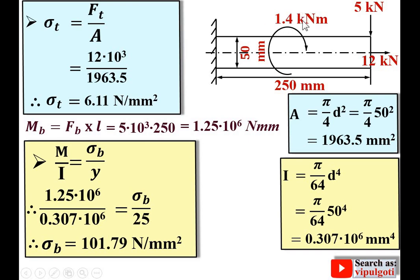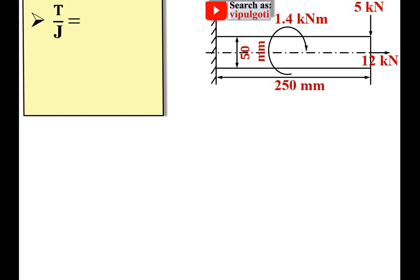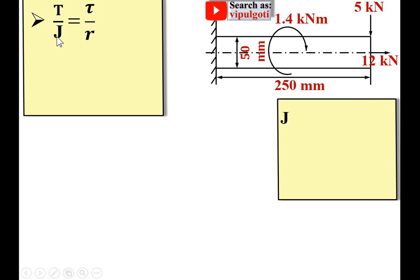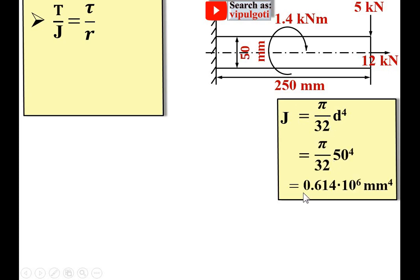Now considering the torque. The fundamental equation for twisting moment is T/J = τ/r, where J is the polar moment of inertia. For a circular cross section, J = π/32 × d⁴. With d = 50 mm, simplifying gives J = 0.614 × 10⁶ mm⁴.